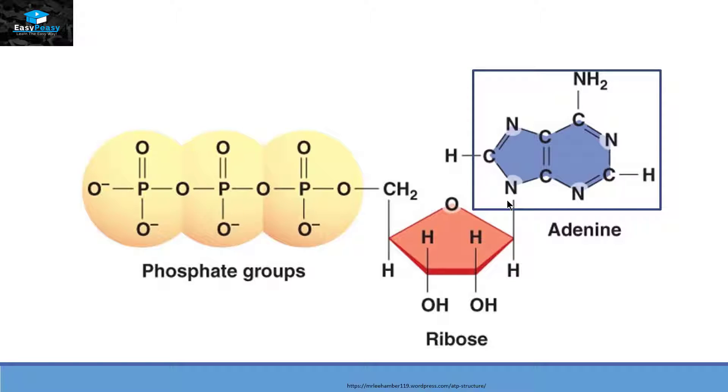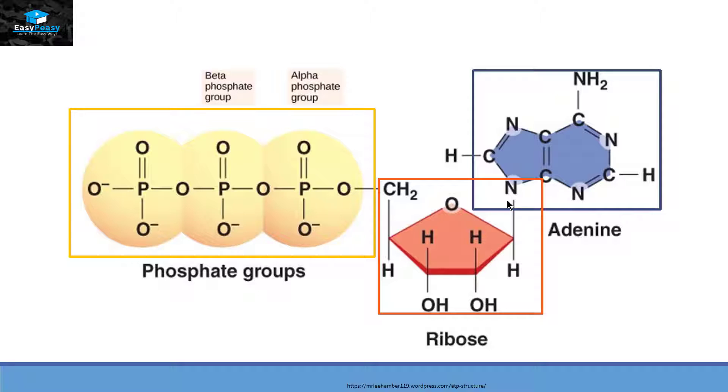So this molecule has a nitrogenous base called adenine that is attached with the ribose sugar and this ribose sugar is attached with 3 phosphate groups. The first phosphate group is called alpha phosphate group, the second one is called beta phosphate group and the third one is called gamma phosphate group. The bond that is present between the alpha phosphate group and ribose sugar is called an ester bond and the bonds present between alpha and beta phosphate group or beta and gamma phosphate group are high energy bonds and they are called anhydride bonds.